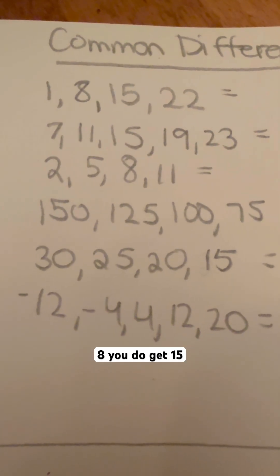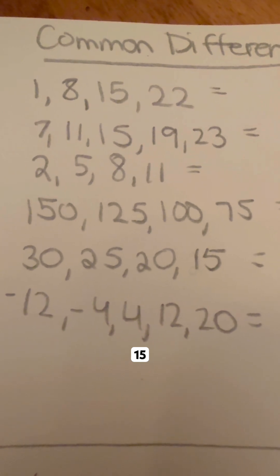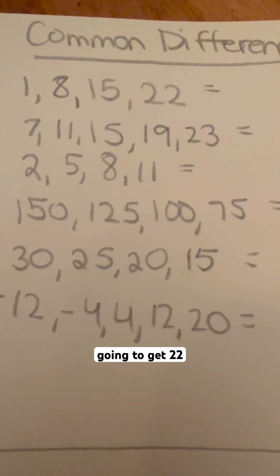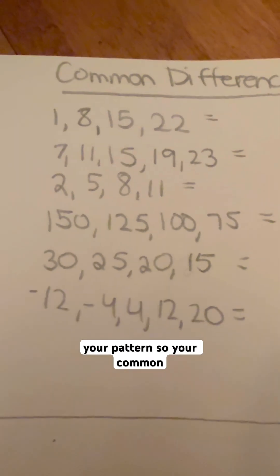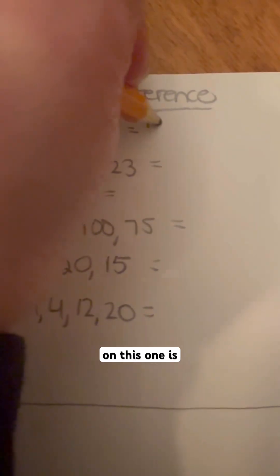So when you add 7 to 8, you do get 15. You add 7 to 15, you're going to get 22, and that would continue your pattern. So your common difference on this one is 7.